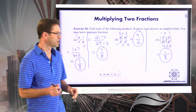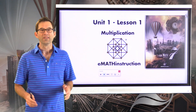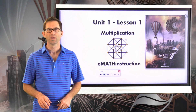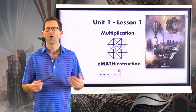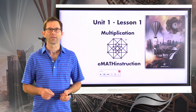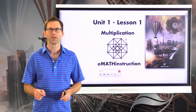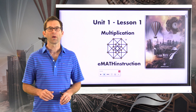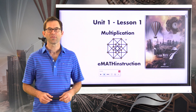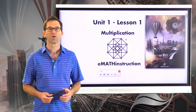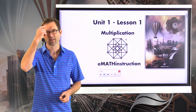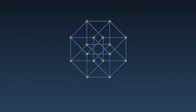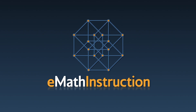Let's wrap up this first lesson in Math 7. Our first lesson in NGen Math 7 by EMath Instruction was all about multiplication — a reminder of how we multiply using decimals and fractions, and important properties like the commutative and associative property. All very important skills going forward. Thank you for joining me; my name is Kirk Weiler, and until next time, keep thinking and keep solving problems.